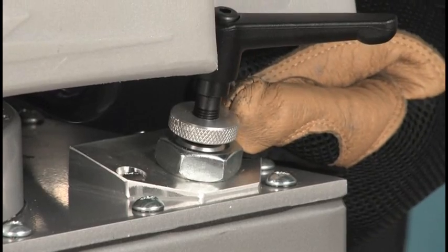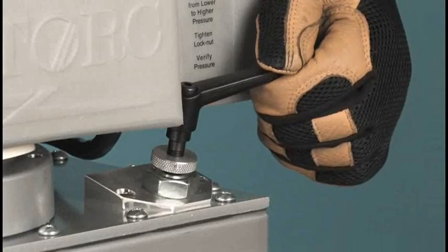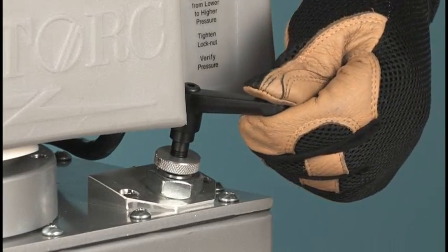Note that there is a locking nut under the regulator knob to keep it from vibrating loose. By limiting the pressure the pump will generate, we control the maximum torque output of the wrench.